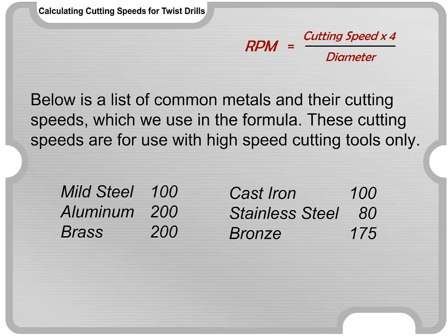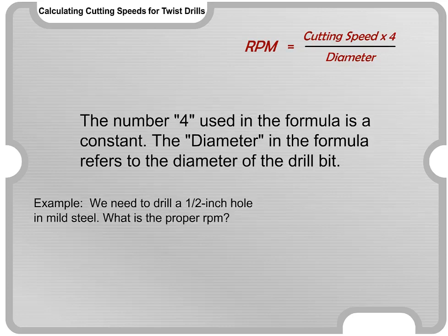Below is a list of common metals and their cutting speeds, which we use in the formula. These cutting speeds are for use with high-speed cutting tools only. The number 4 used in the formula is a constant. The diameter in the formula refers to the diameter of the drill bit.